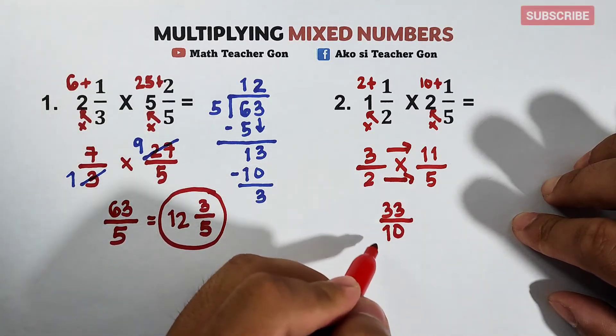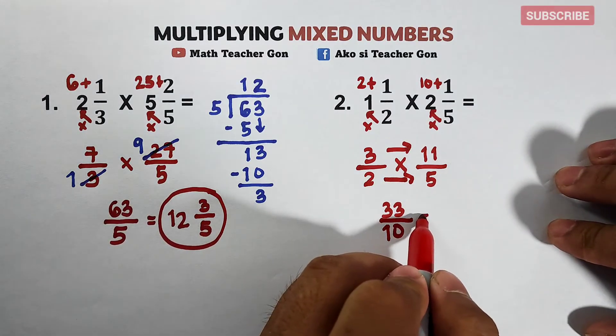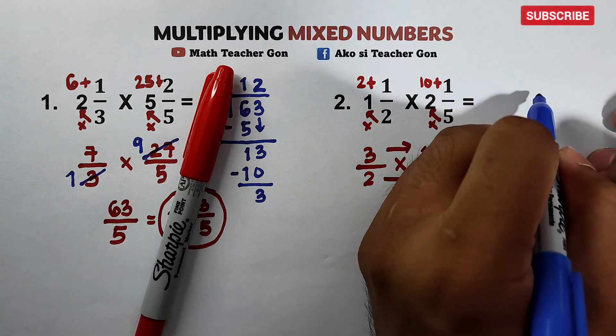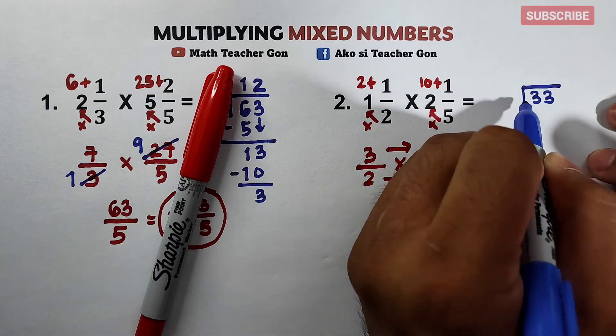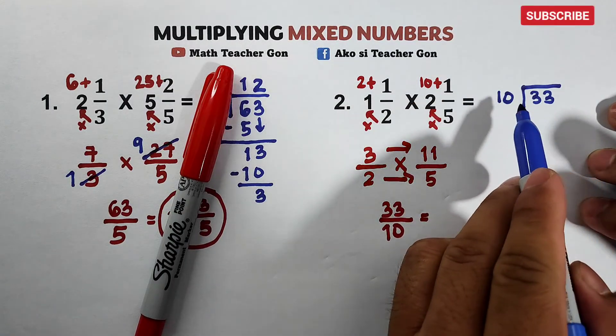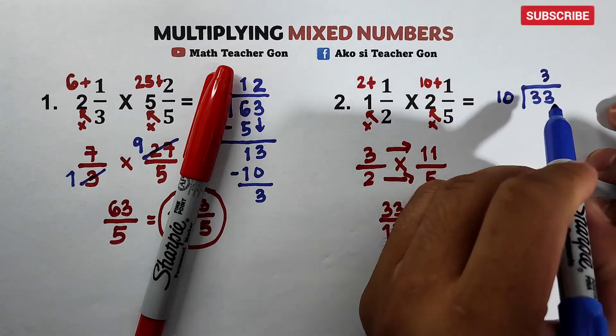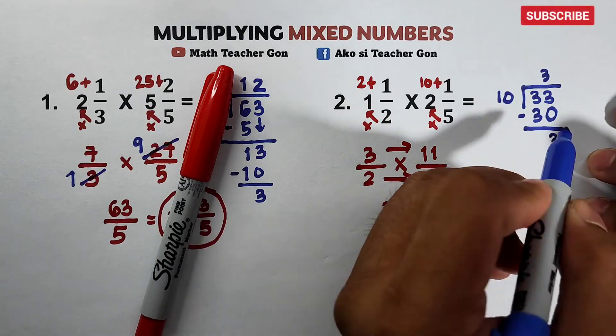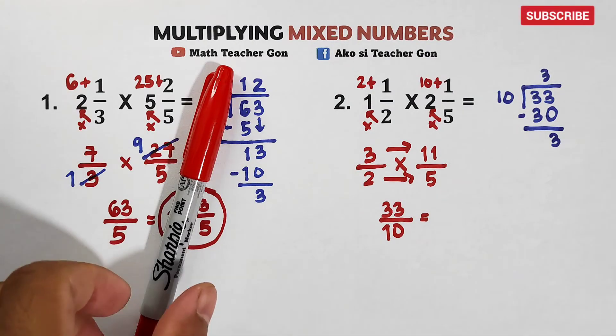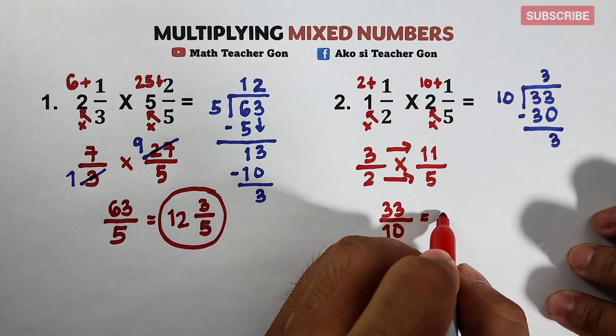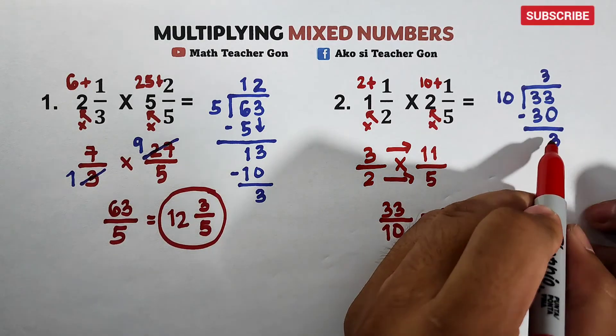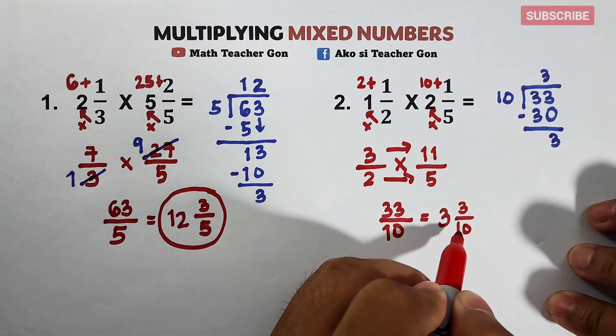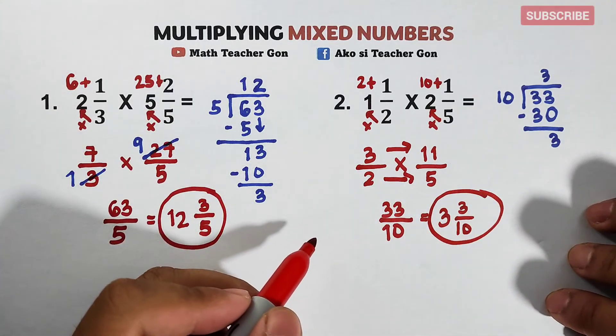As you can see, we have this improper fraction. This is equal to what mixed number? Let me show you the process. First, we have 33 divided by 10. 33 divided by 10 is equal to 3. 3 times 10 is equal to 30. Subtract this, this is equal to 3. As you can see, we have our quotient here. This will serve as the new whole number. Your remainder 3 will serve as your numerator. Your divisor is your denominator. And this is the answer, guys. 3 and 3 over 10.